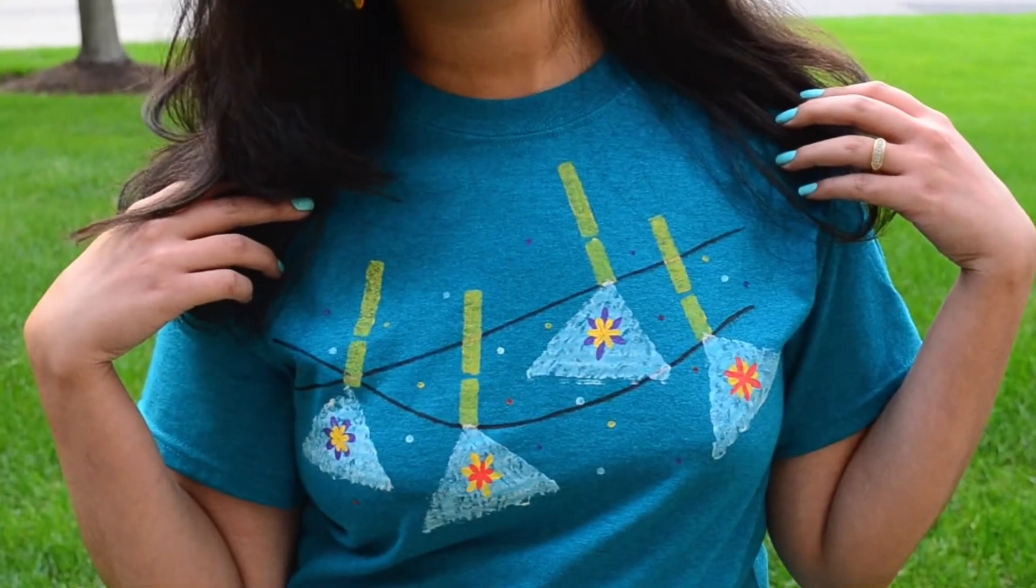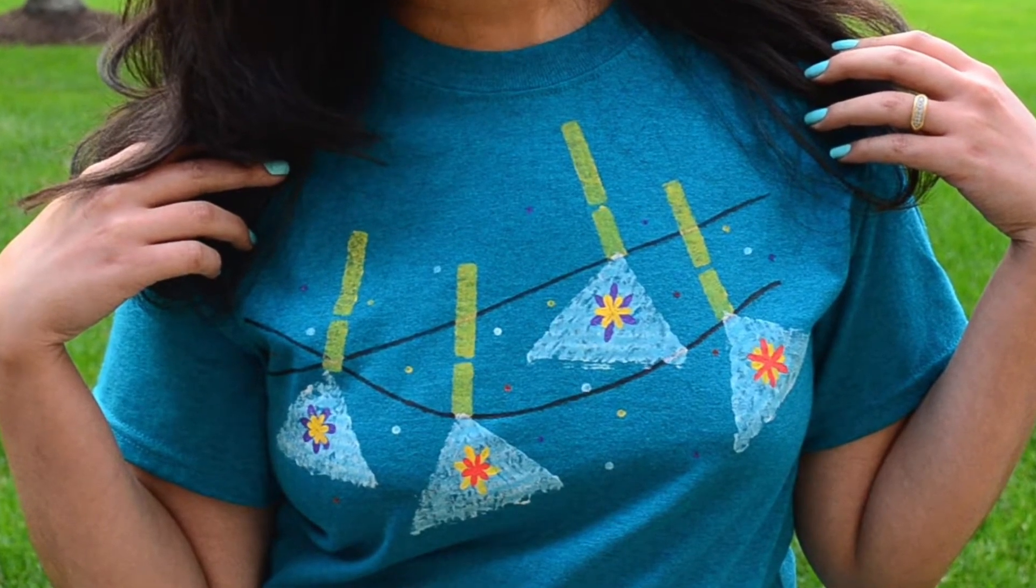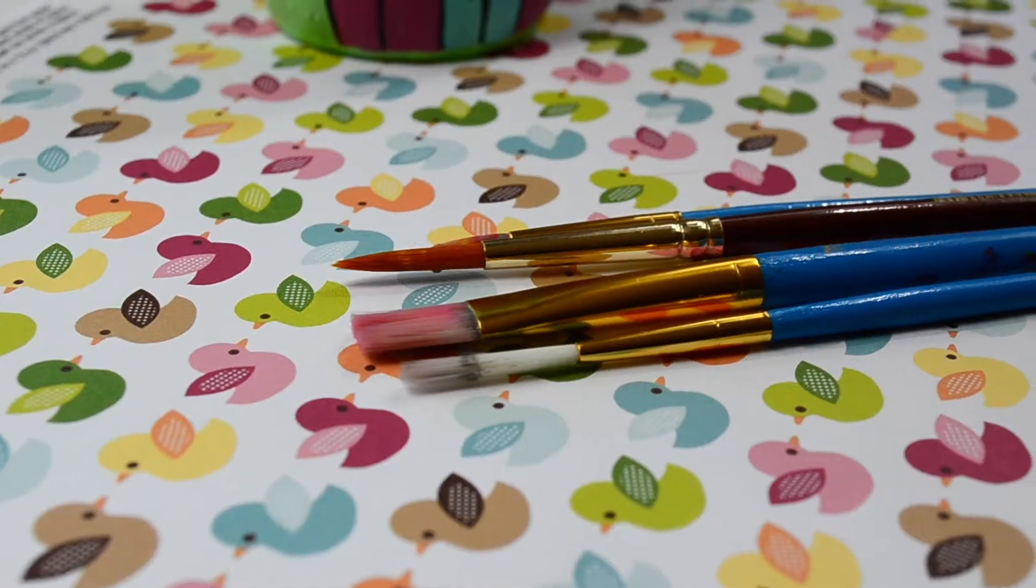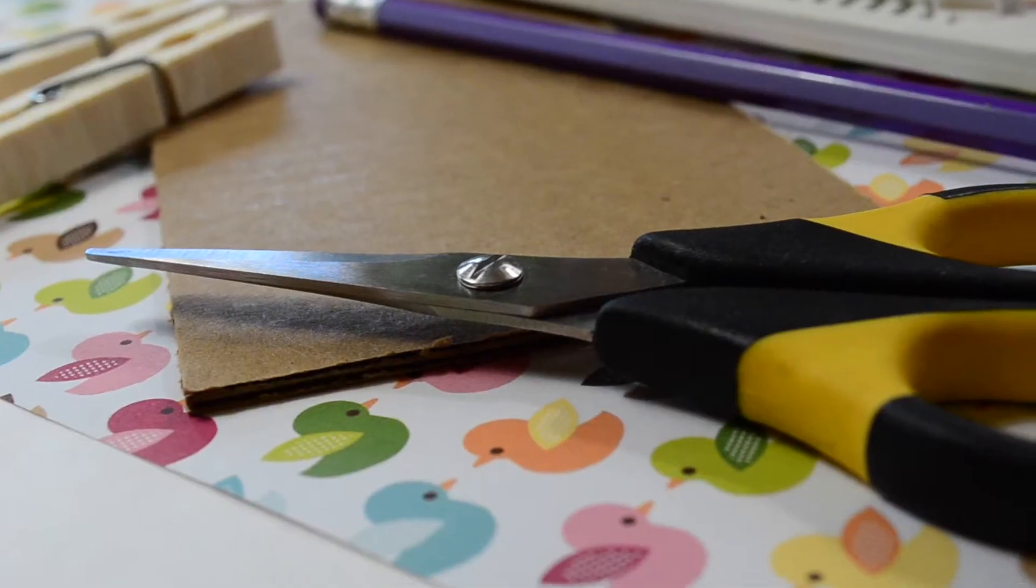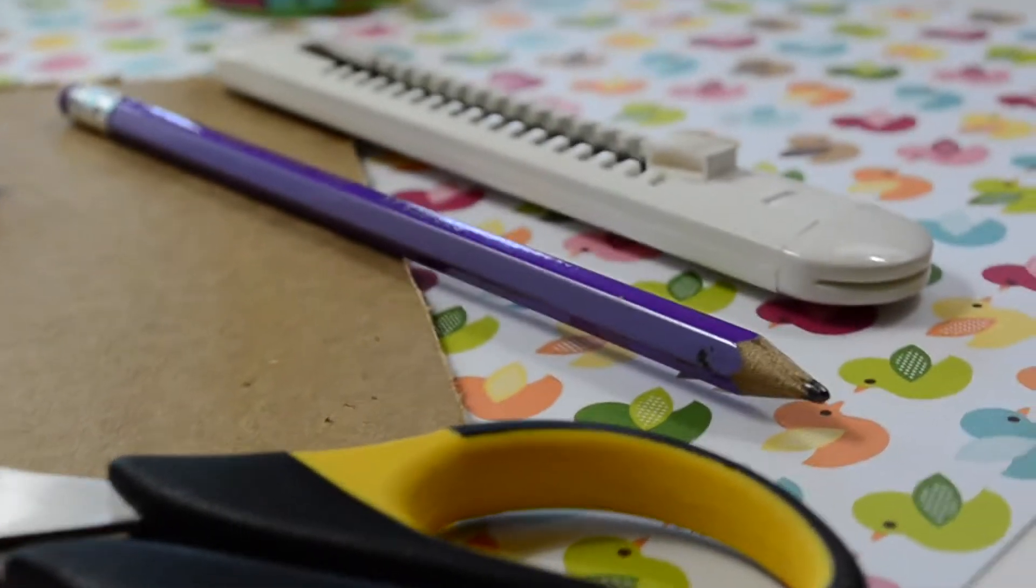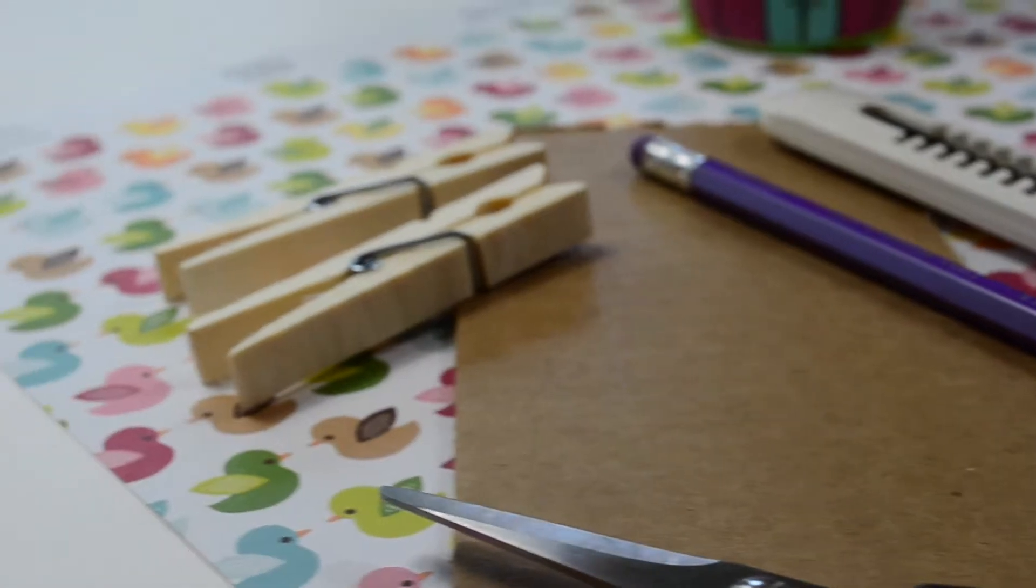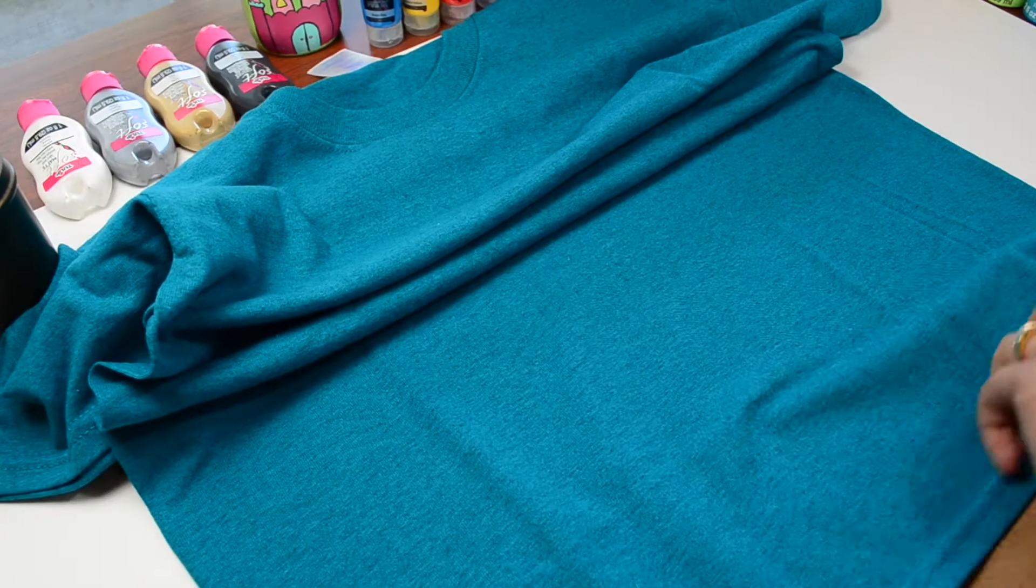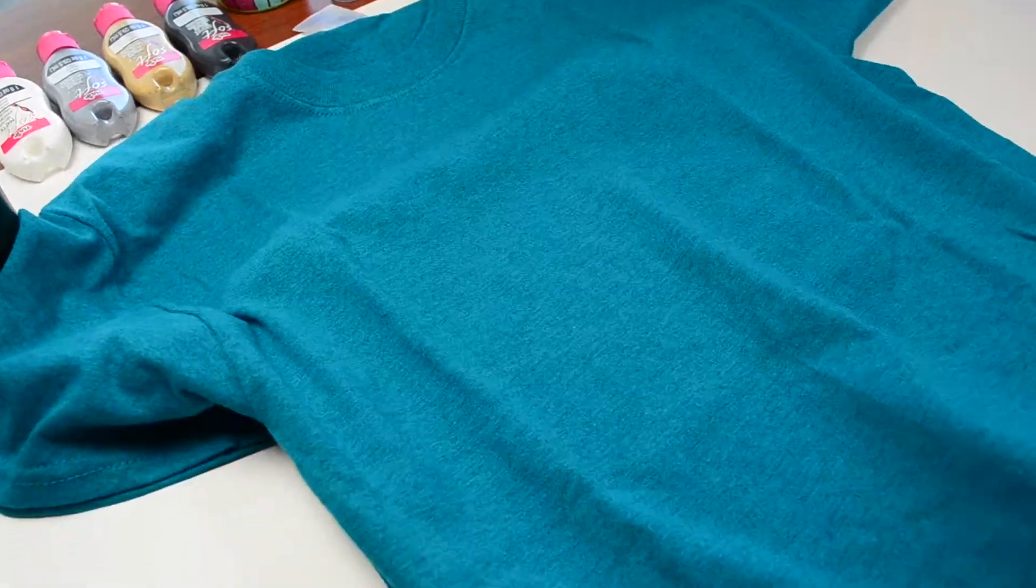For making this drink photo hanging t-shirt, we will need fabric paints, paint brushes, pair of scissors, pencil, cutter, cardboard and cloth pins. Insert a cardstock paper as we did earlier.